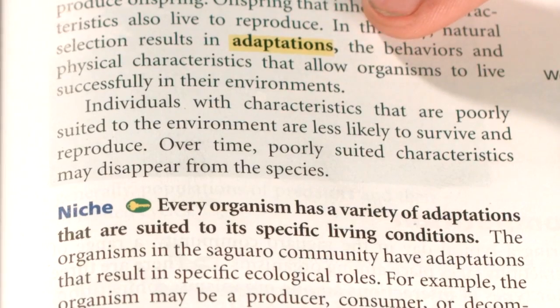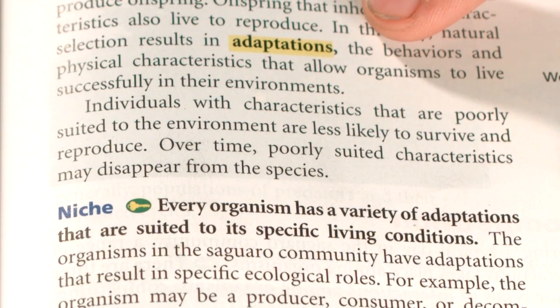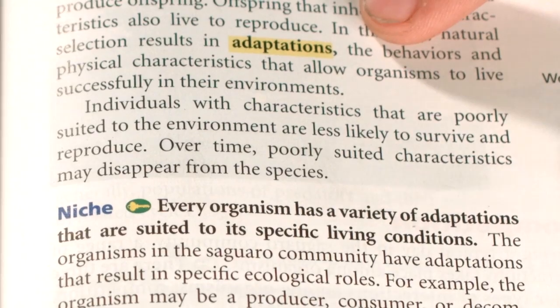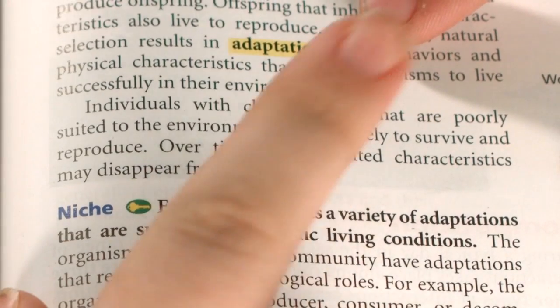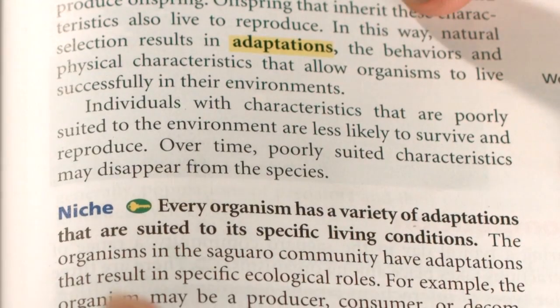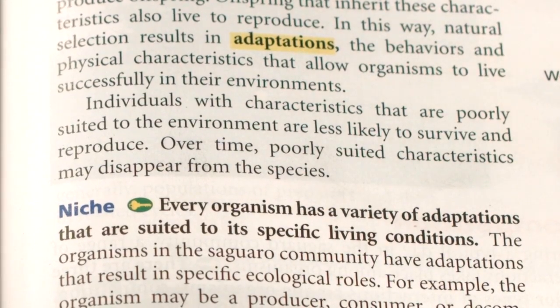So adaptation is real? I saw an explanation of it in the Focus on Earth Science. Individuals with characteristics that are poorly suited to the environment are less likely to survive and reproduce. Over time, poorly suited characteristics may disappear from the species. So a population of animals can adapt by expressing variety over time, but there are limits to how much they can change.